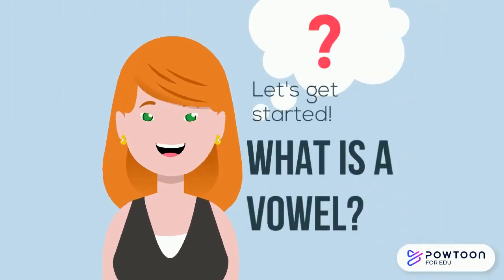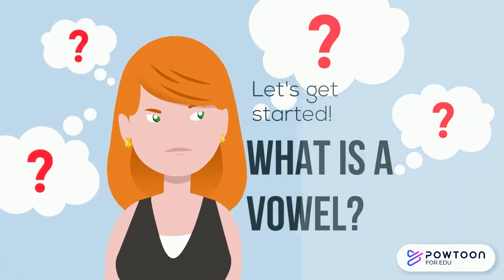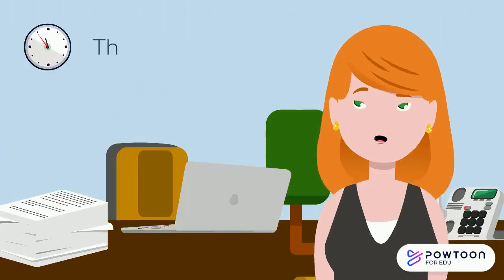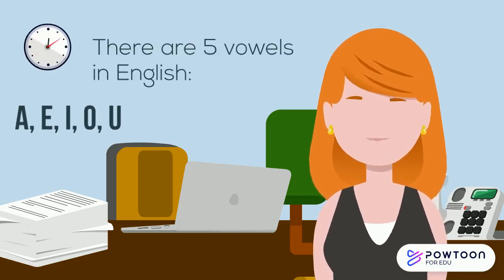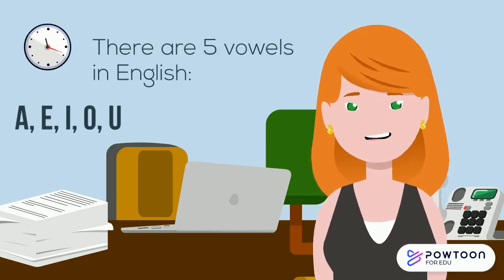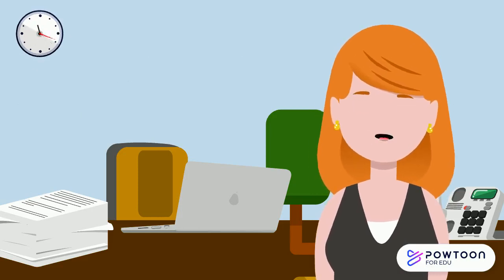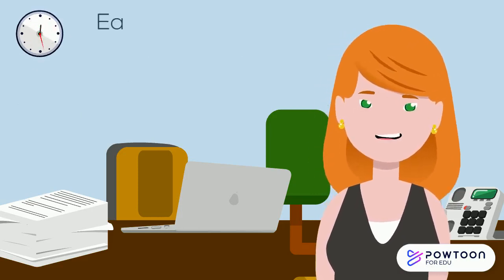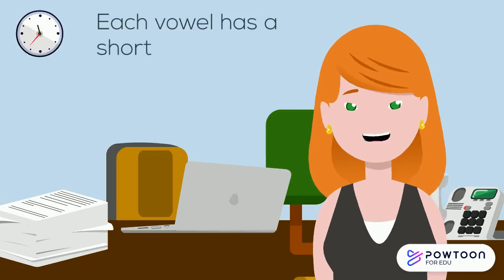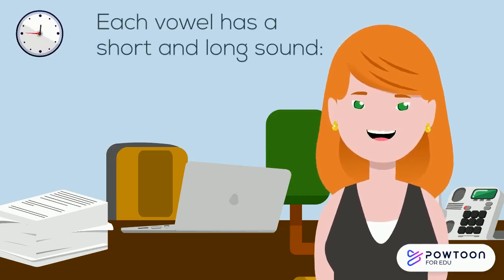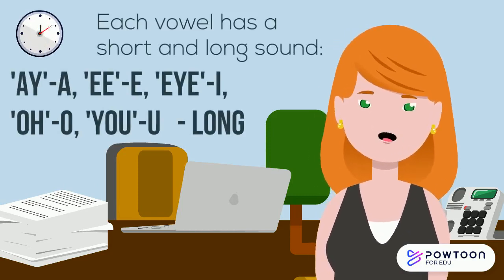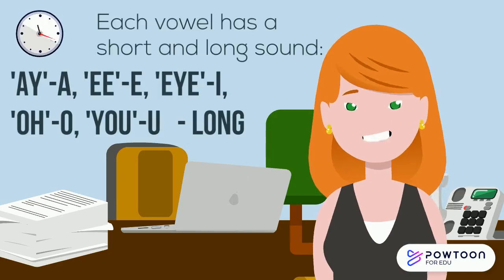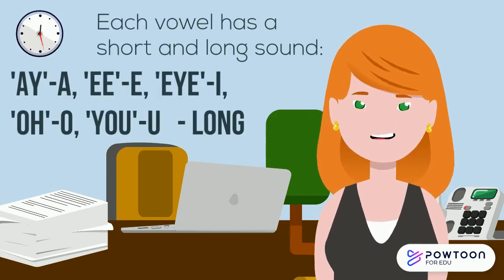What is a vowel? There are five vowels in English: A, E, I, O and U. Each vowel has a short and long sound. The long sound is how we usually say them in English: A, E, I, O, U. These are the long sounds of the vowels.